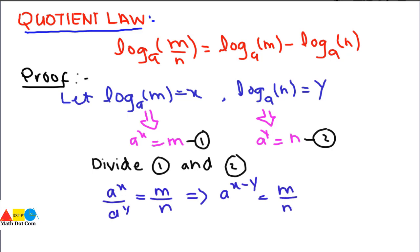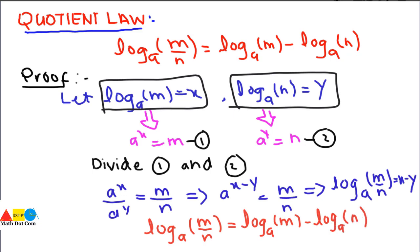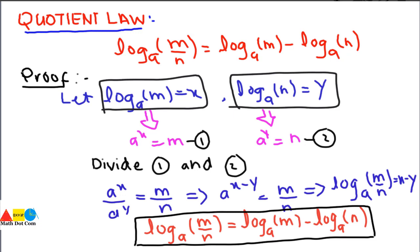Converting this exponential form into log form gives: log_a(m/n) = x − y. Substituting the values of x and y back: log_a(m/n) = log_a(m) − log_a(n). This is the proof of the quotient law, where the left hand side equals the right hand side.